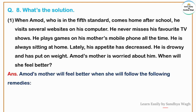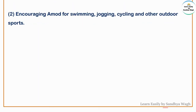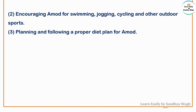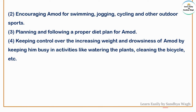Amod's mother will feel better when she follows the following remedies: allowing Amod to use computer, TV and mobile only for one hour in a day; explaining him the disadvantages of their overuse; encouraging Amod for swimming, jogging, cycling and other outdoor sports; planning and following a proper diet plan for Amod; keeping control over increasing weight and drowsiness by keeping him busy in activities like watering plants, cleaning the bicycle, etc.